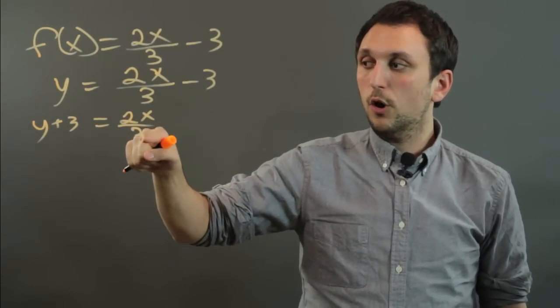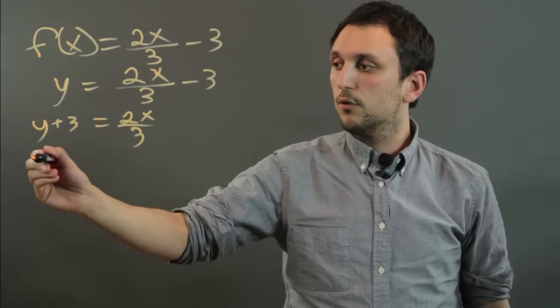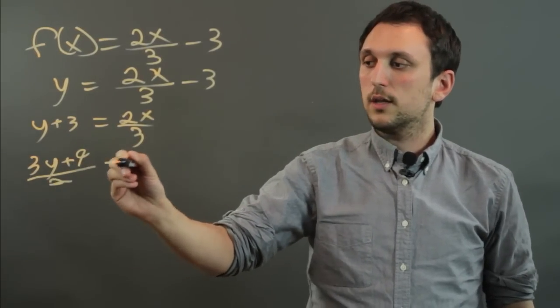And then if this is 2 over 3, we're going to multiply by 3 over 2 on both sides. So we get 3y plus 9 over 2 equals x.